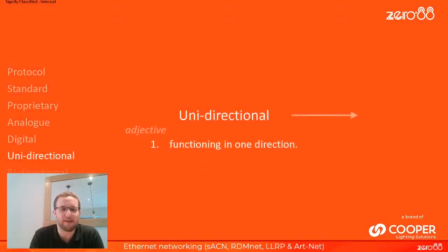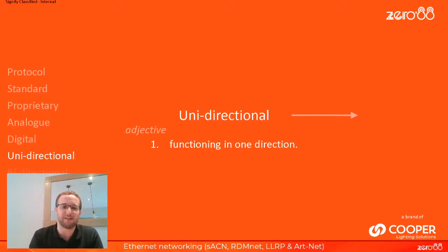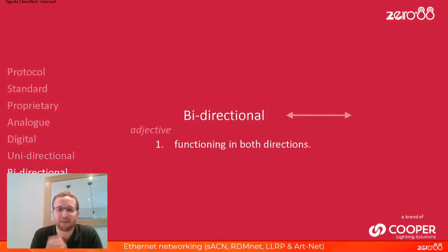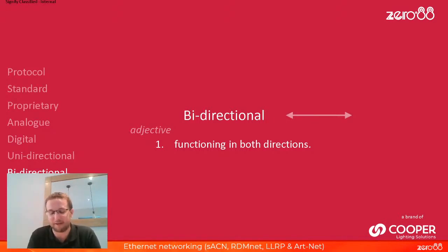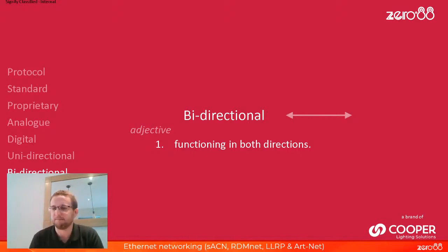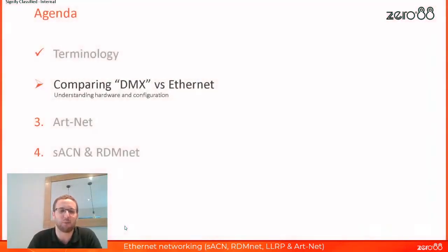The last two terms: unidirectional and bidirectional. This broadcast is currently unidirectional — happening in one direction. DMX, for example, is a unidirectional protocol. Bidirectional means things happen in both directions, like a conversation. Protocols such as remote device management are bidirectional — things can happen in both directions. In a unidirectional setup the console can speak to the light but the light cannot speak back. In a bidirectional situation, the console and the moving light can talk to each other and pass information backwards and forwards.